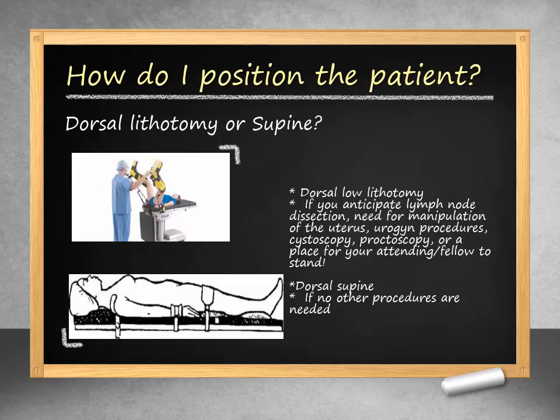Low lithotomy is preferred if one anticipates a periaortic lymph node dissection, need for manipulation of the uterus, need for access to the bladder or pelvis for a urogynecological procedure, or anticipation of access to the rectum. In a teaching hospital this also provides a nice place for the attending or fellow to stand and assist.